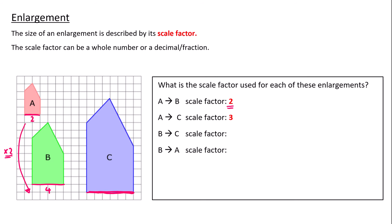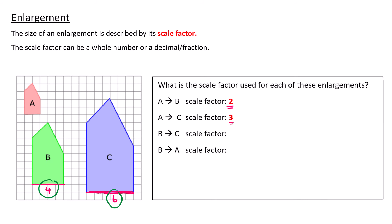The base of C is 6. So to get from A to C, from 2 to 6, I multiply by 3. The scale factor is 3. To find the scale factor, you can divide 6 by 2 to get 3, or divide 4 by 2 to get the scale factor of 2. So to get the scale factor, you divide the bigger length by the smaller length.